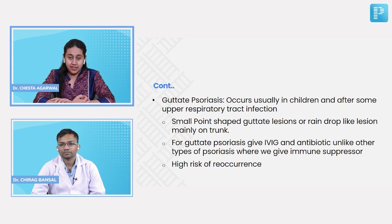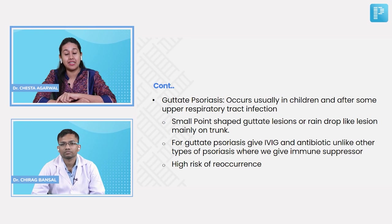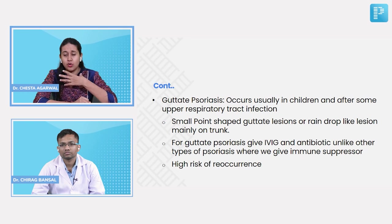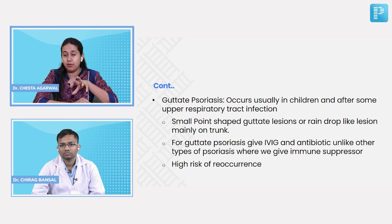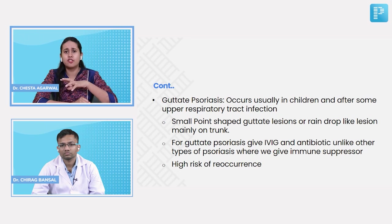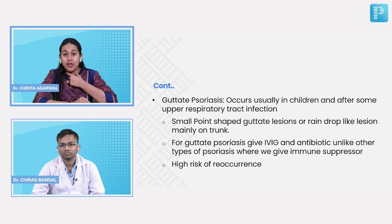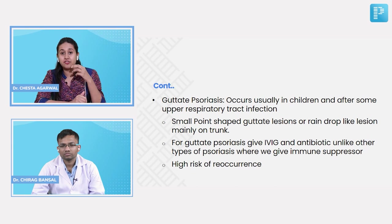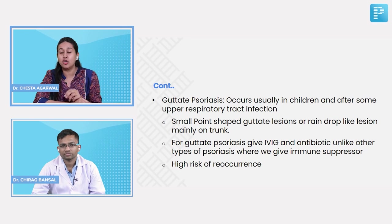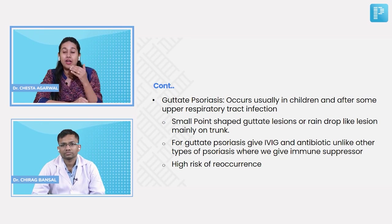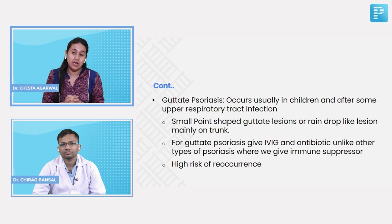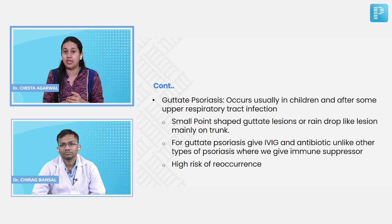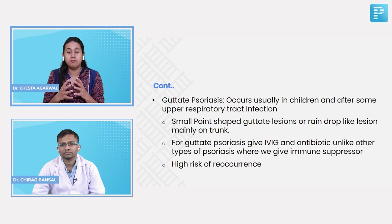Guttate psoriasis mainly presents in children as small coin-shaped or raindrop-like lesions located mainly on the trunk followed by extremities. It is preceded by an infective focus — ear infection, middle ear infection, pharyngitis, tonsillitis, or GI infections — caused by beta-hemolytic streptococcus. Unlike other psoriasis requiring immunosuppressants, guttate psoriasis is treated by giving antibiotics targeting the infective focus. There is also a higher risk of recurrence whenever the patient develops infection again.